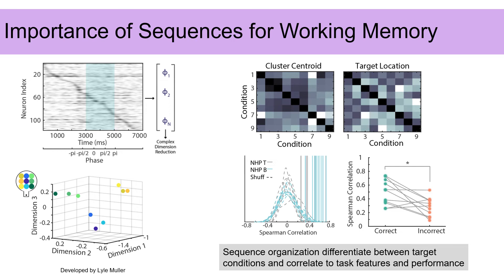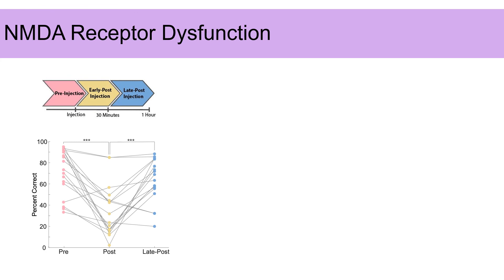To relate these findings with the task variables, we calculated correlations between the distance between cluster centroids and the physical distance between target locations in the arena. This plot shows the correlation coefficients for each session by the individual lines compared to the shuffle correlation distributions. And these correlation values are higher than predicted by chance. On average, correlations were higher for correct trials than incorrect trials, indicating that the relationship between temporal sequences and remembered target location is related to task performance.